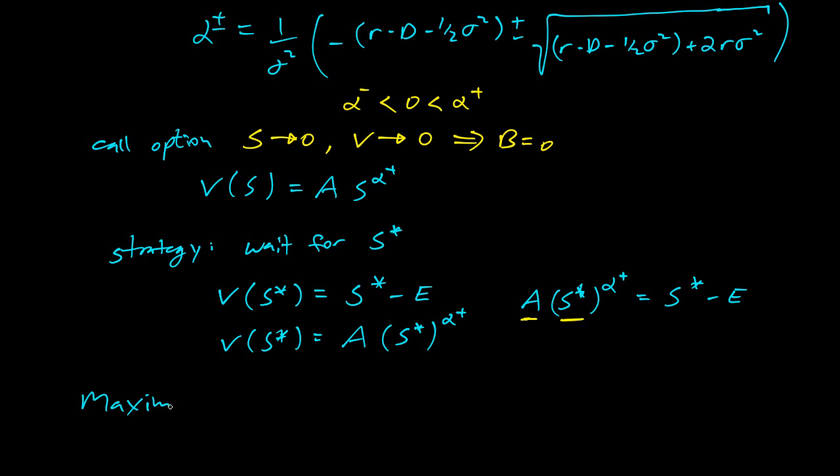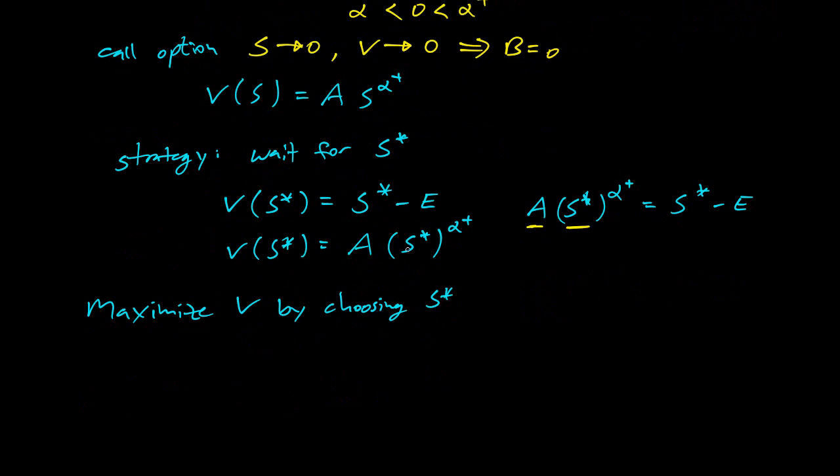So what else can we say? The next step is to maximize V by choosing S star. So of course, I'm deciding when to exercise my options. I want to maximize my value that I get out of my option. And that's how I'm going to choose my S star to maximize my value. So what does that mean? I want to take dV dS and set it equal to zero. Then solve for S star.